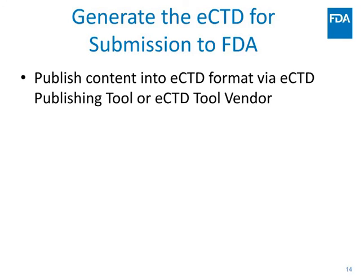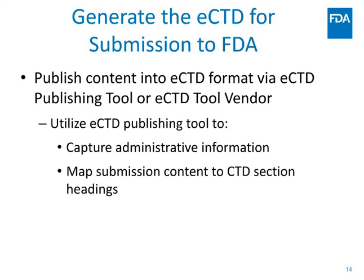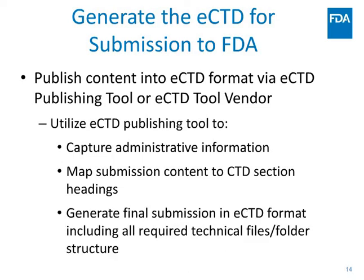Now that you have your submission ready, you want to generate it into ECTD format. You can do that by publishing the content via an ECTD publishing tool or using an ECTD tool vendor. That ECTD publishing tool will capture the administrative information about your product and company, map your content - PDF files, Word documents, Excel files, or study data files - into the proper CTD sections, and then generate that final submission into ECTD format, including all the required technical files and folder structure.